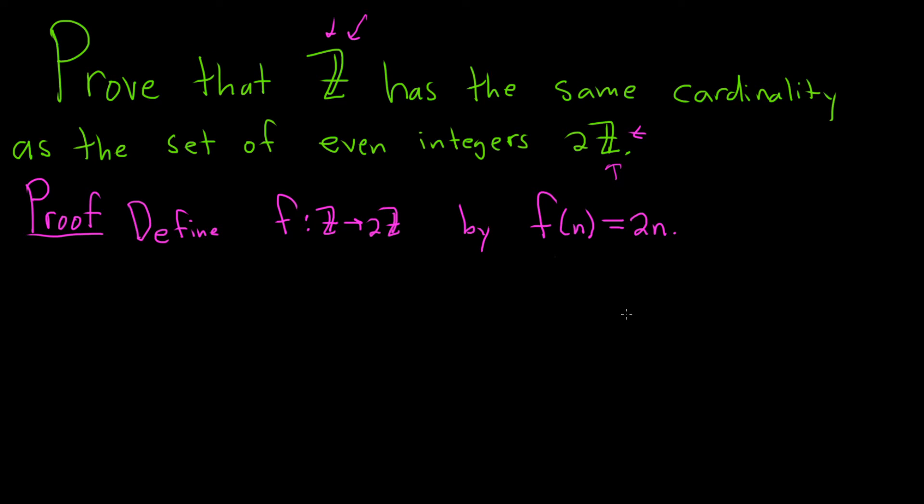So now we just have to show it's bijective. Again, that means it's 1 to 1 and onto. So let's do each piece individually.